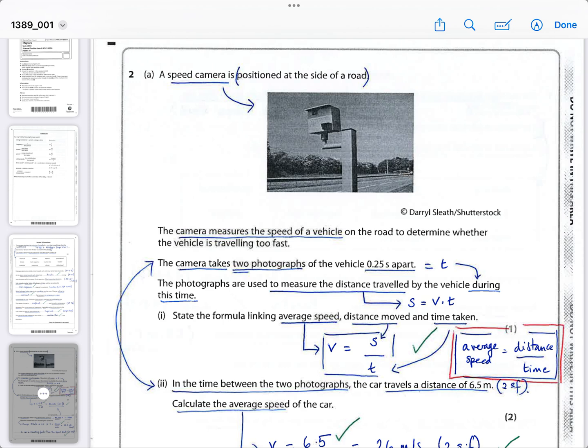You have to state the formula linking average speed to distance moved and time taken. You need to do it as a word equation to be correct in terms of physics, but you can see the way I've used the symbols by drawing arrows to the words. So it's a kind of clever way of showing that you know what each symbol means and that you know that each symbol represents the words that they're asking for. I think either of those methods will get you the mark, but technically the correct way is to use a word equation.